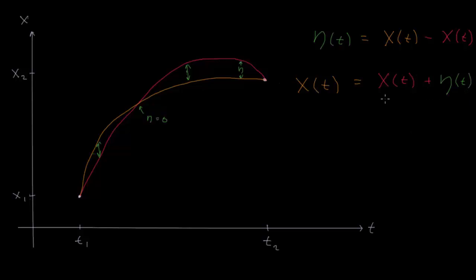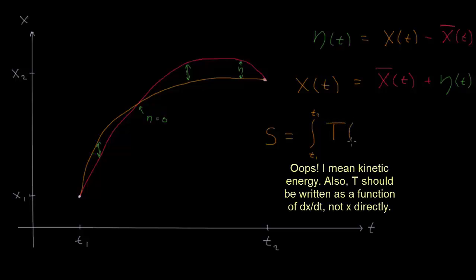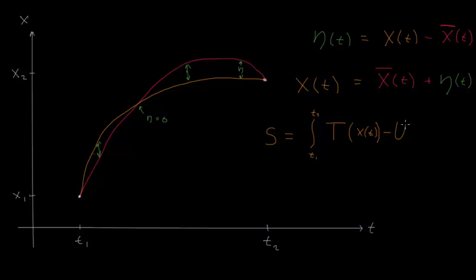Since it's not very common to use colors to differentiate between two different functions, I'll put a bar over this pink x. But this is what we're calling the true path. So if we want to calculate the action, the action for this orange path here, we could write the integral from t1 to t2 of the kinetic energy, which is a function of x, which is a function of t, minus the potential energy, which is also a function of x, which is a function of t, integrated over time.